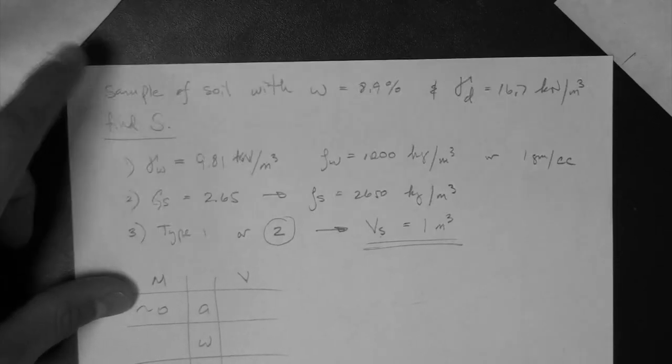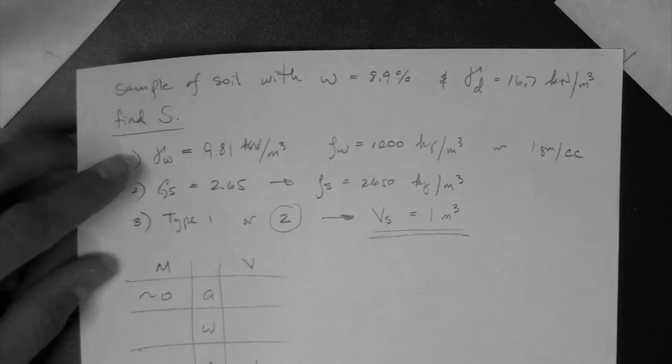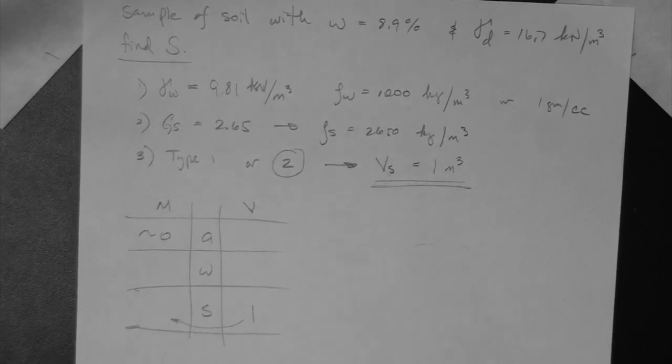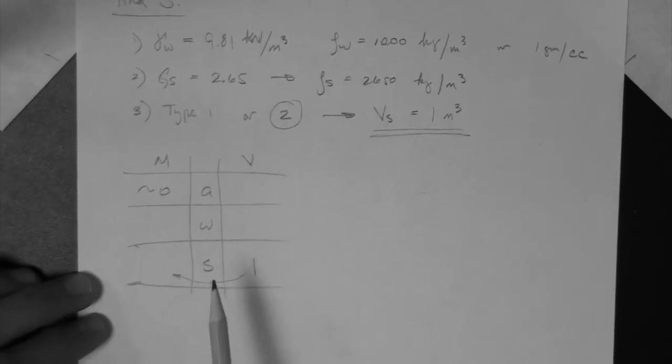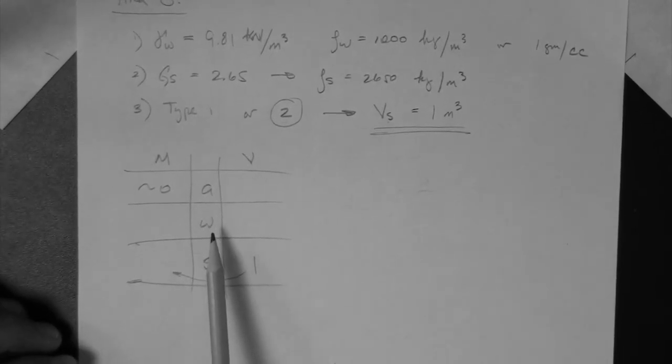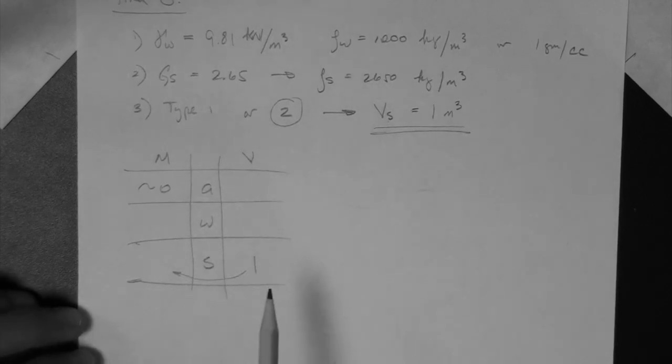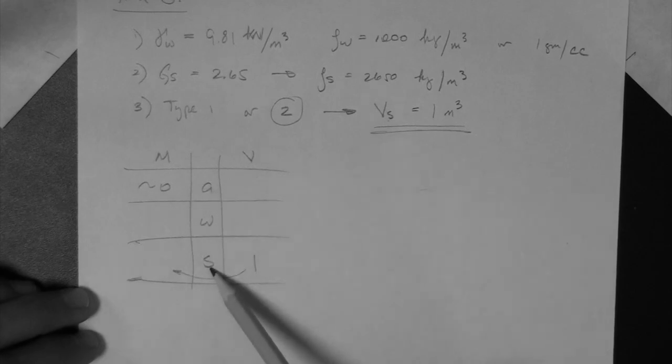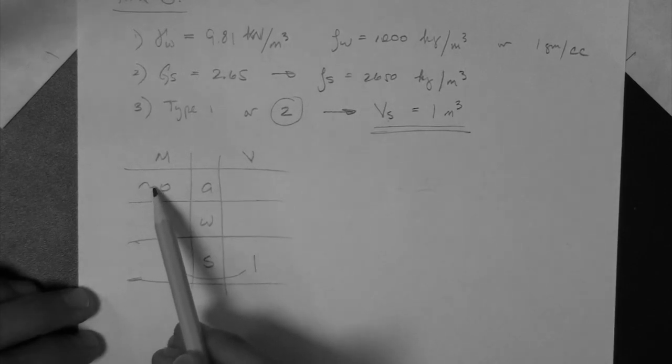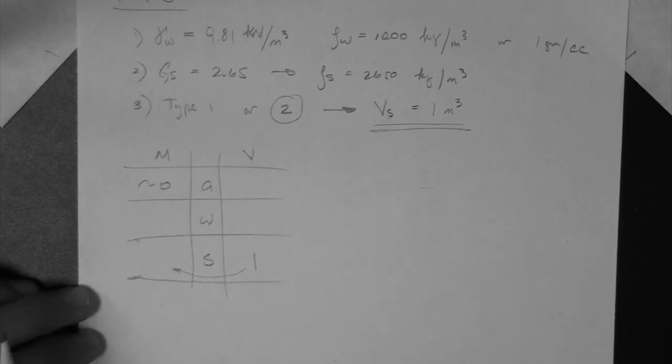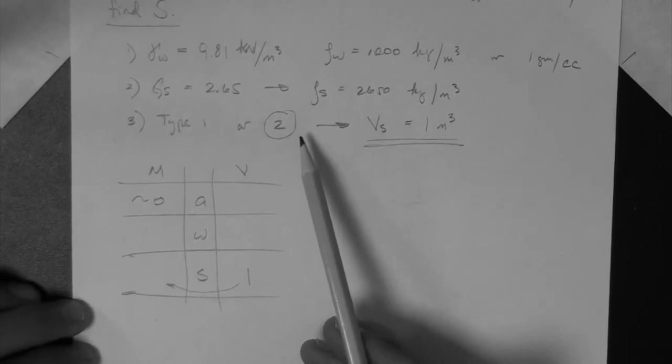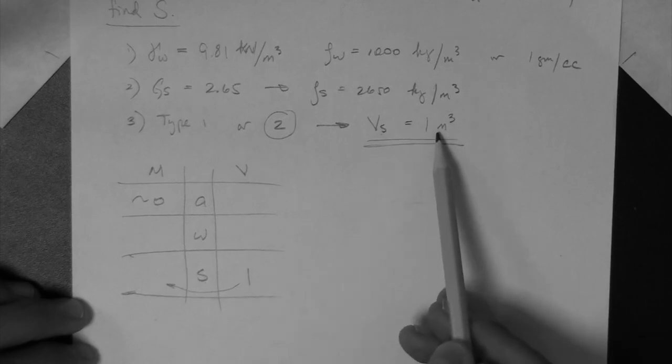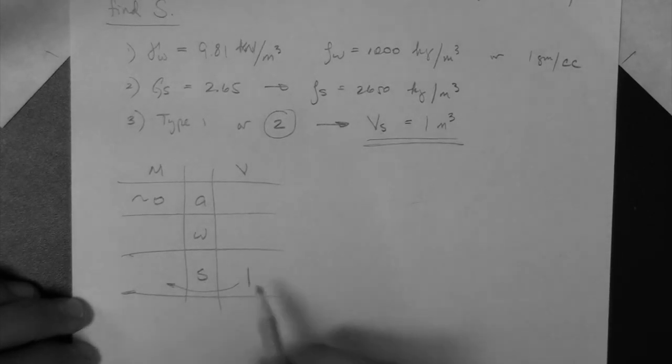Okay, so remember that to continue to solve a phase relationship problem like this one, we have to draw the phase diagram, which I drew here before I pressed record on the recorder. So here it is. So this is the mass, volume, air, water, solids, right? We can assume that the mass of air is zero. And here we assumed, based on the fact that this is a type 2 problem, that the volume of solids is equal to 1 meter cubed. So we write it right here, 1.